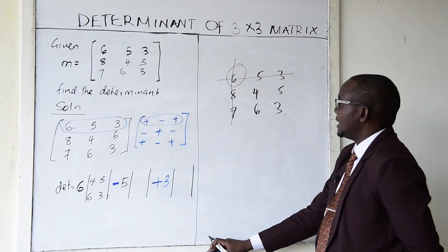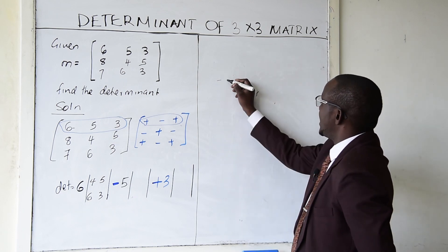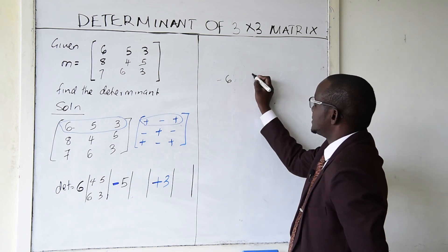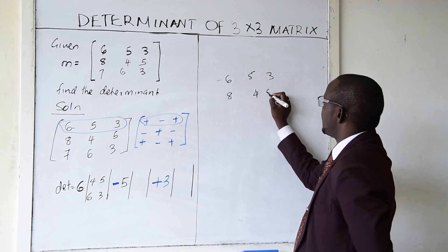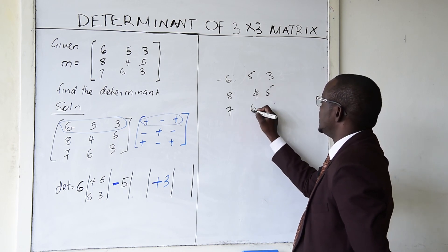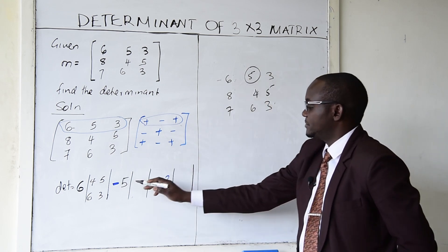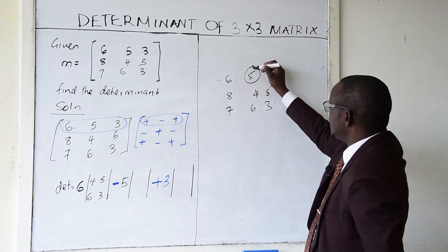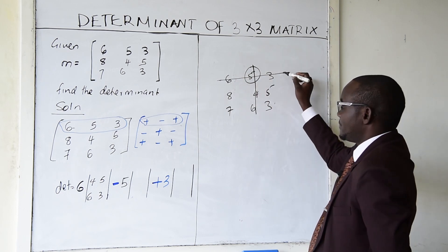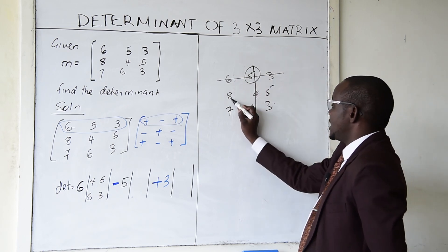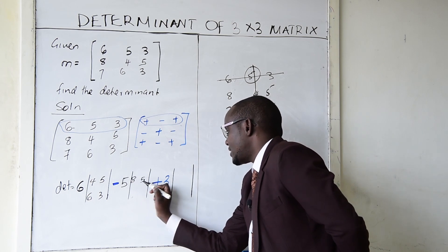For the element 5, I do the same — I cancel the column and row containing 5 in the matrix 6, 5, 3 / 8, 4, 5 / 7, 6, 3. I remain with the 2 by 2 matrix: 8, 5 / 7, 3.